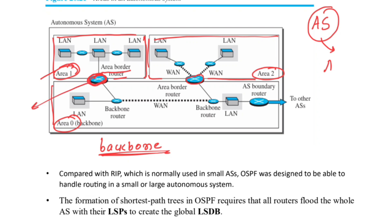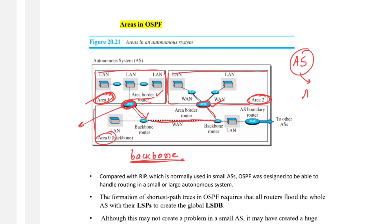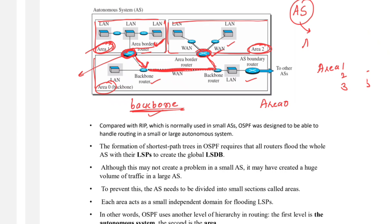The area border router's job is to route information from one area to another, always via the backbone router. The area border router of area 1 summarizes routing information from area 1 and sends it to the backbone router, which then forwards it to the area border router of area 2. RIP, by comparison, does not divide an autonomous system into areas since it is used in small autonomous systems only.